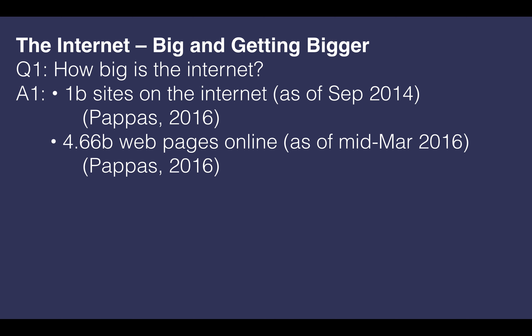The internet is correspondingly big and only getting bigger. As of 2014, there were a billion sites on the internet, with 4.66 billion web pages online as of mid-March 2016. As you can see, it's a massive amount of information out there, contributing to information overload.